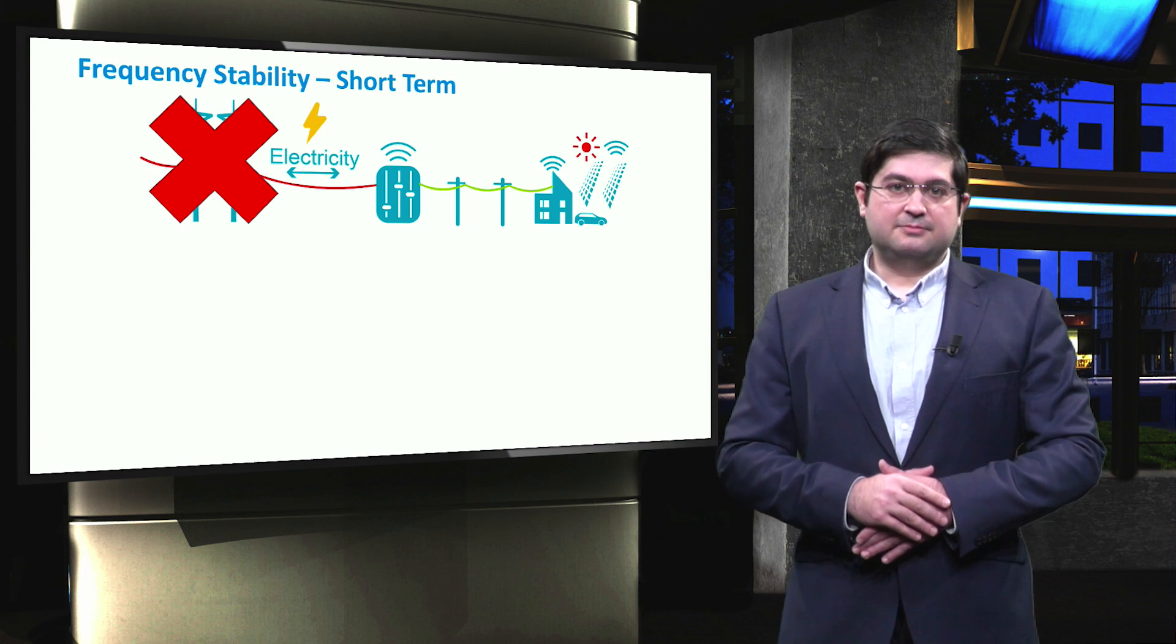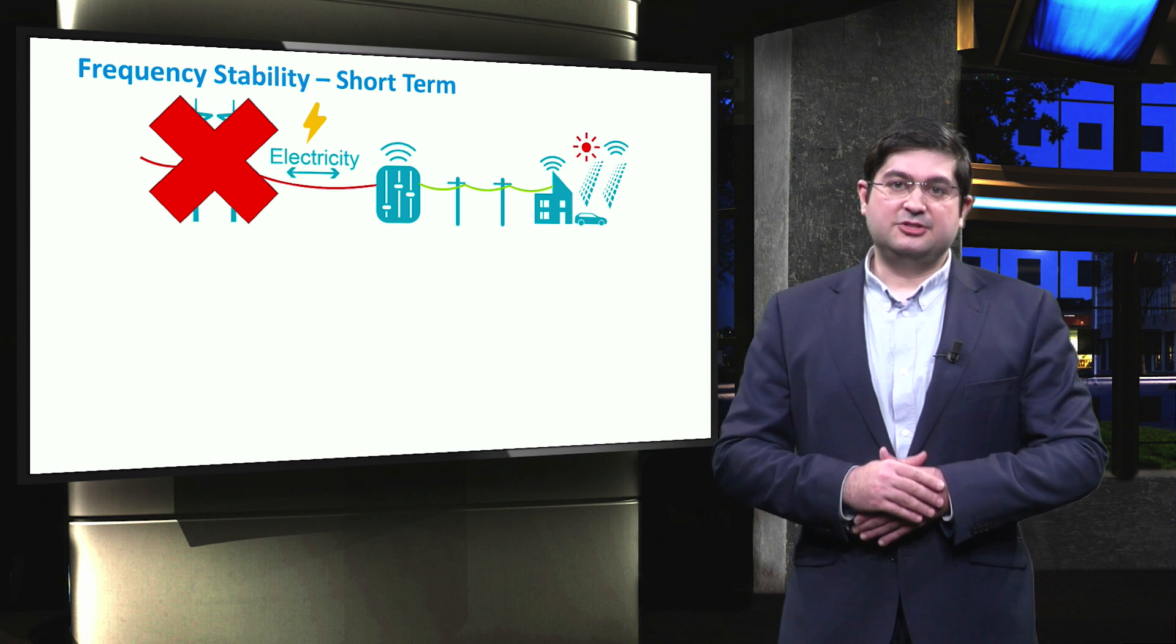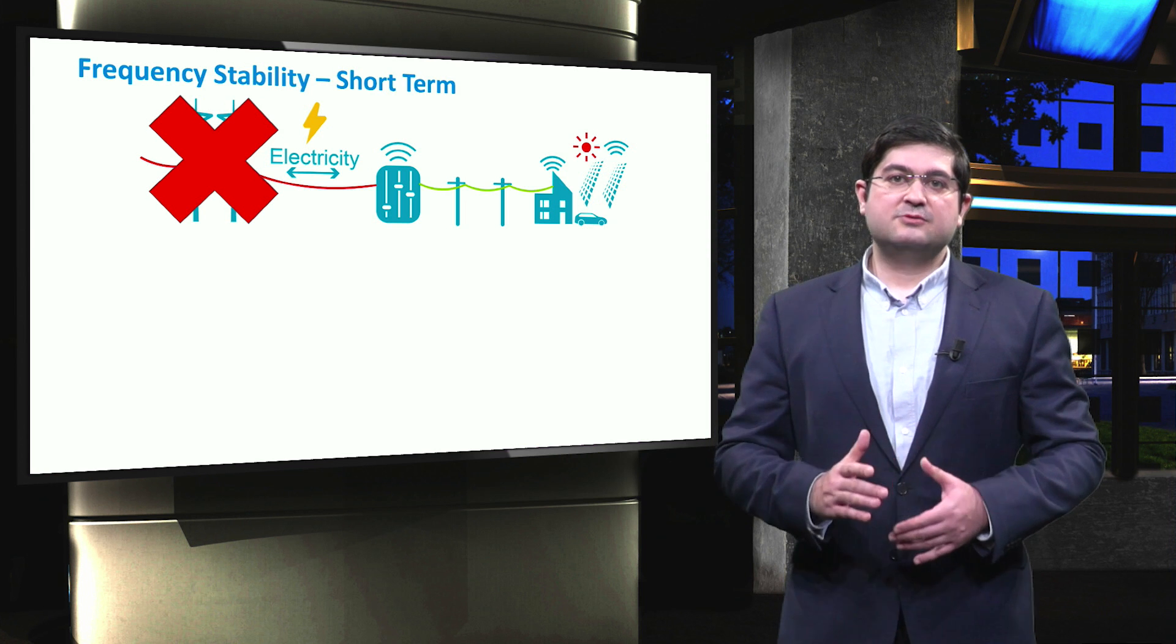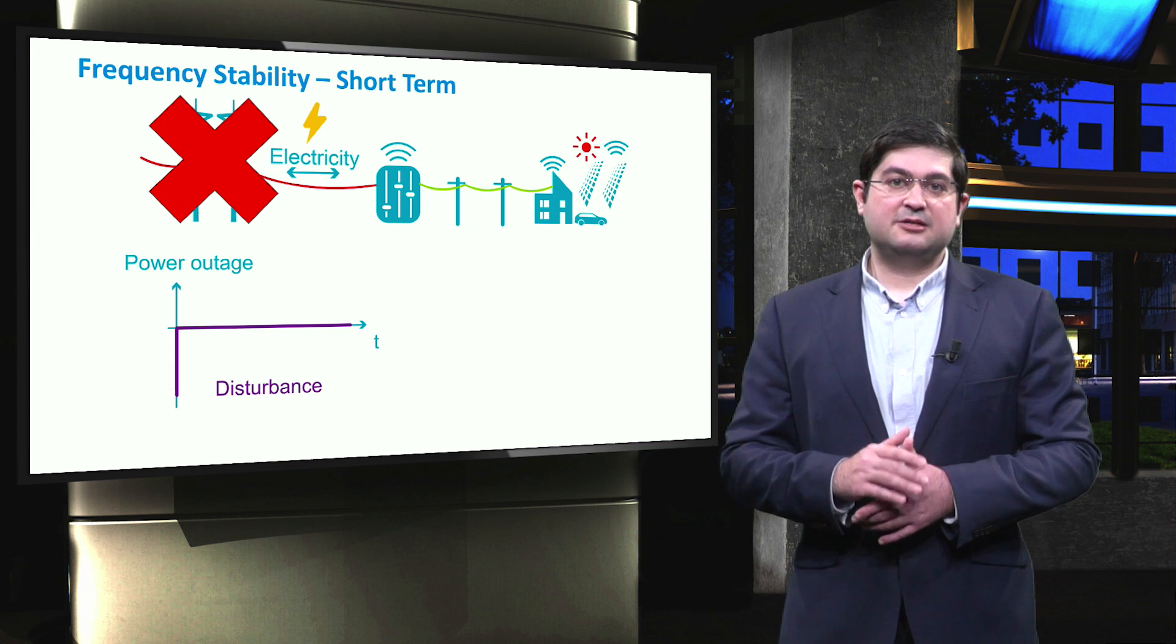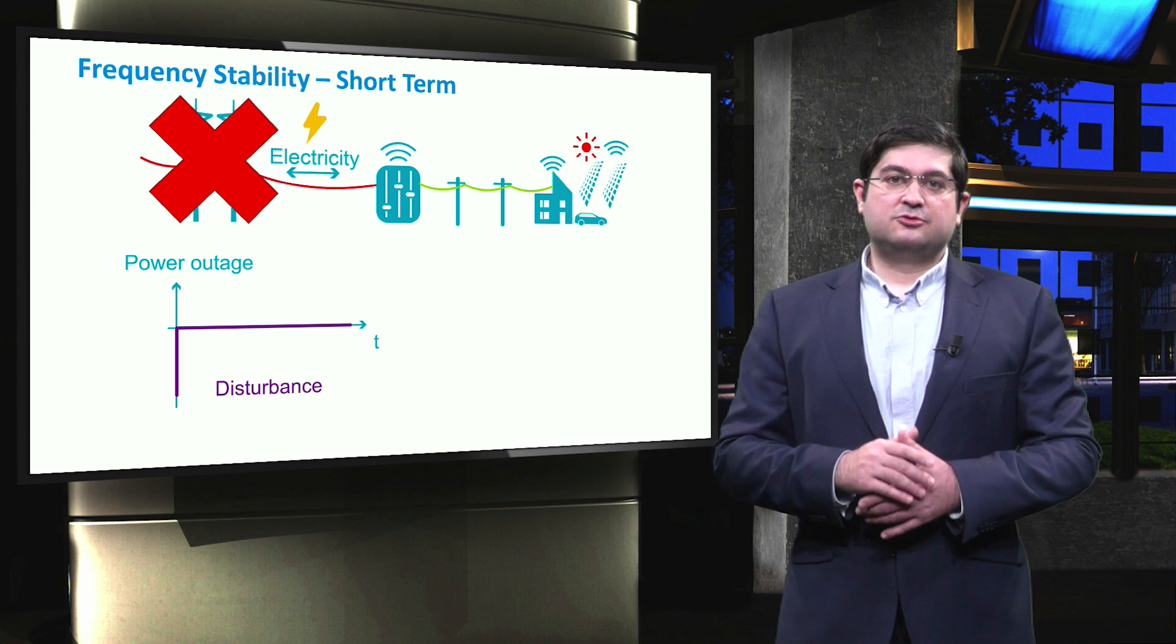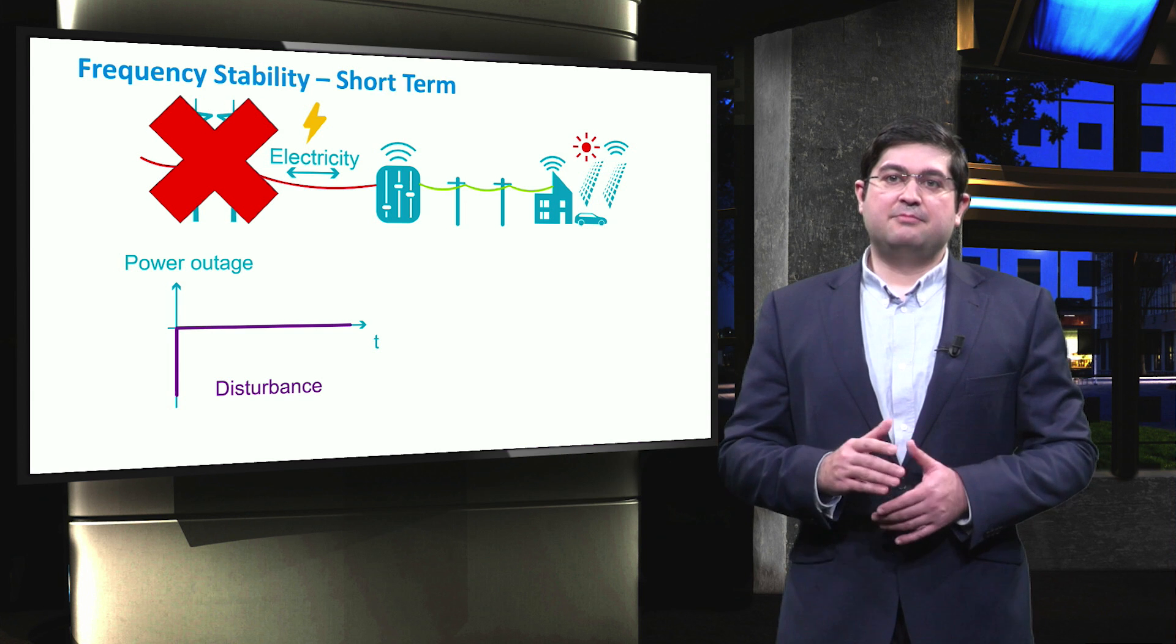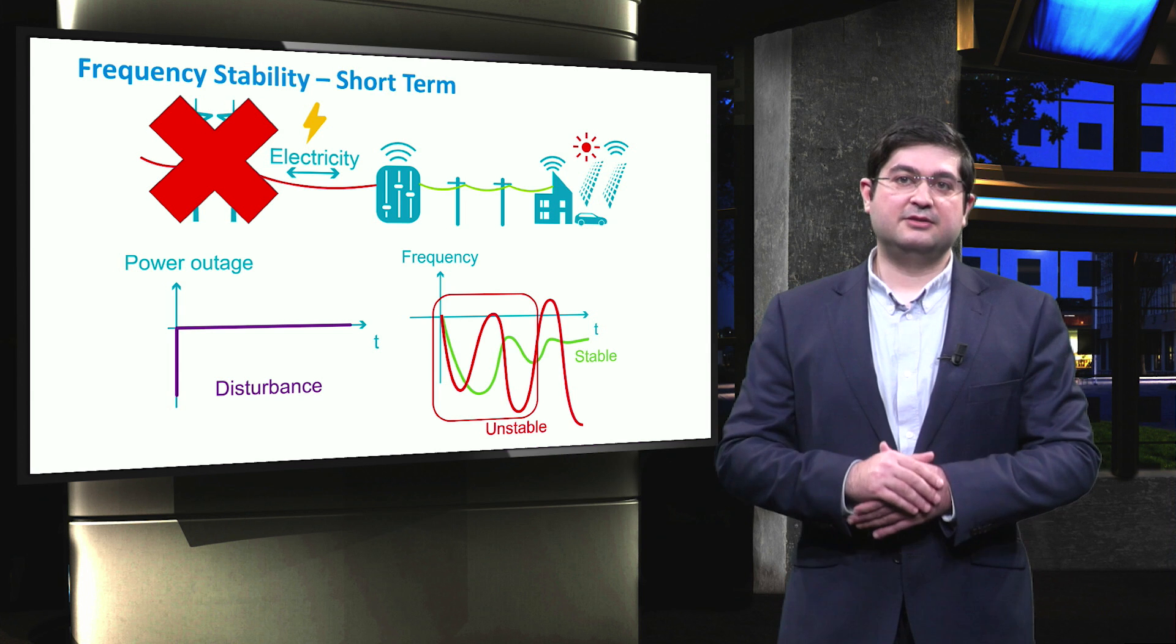During the islanded mode, maintaining the stability of frequency in microgrid is a very challenging task. In the first place, we describe primary frequency control, which is responsible for continuously adjusting the frequency variations, which occur due to disturbances like power outages. Note that this control is automatically and locally activated by the so-called droop control of DG units in microgrids to arrest the initial frequency drop right after a contingency event.